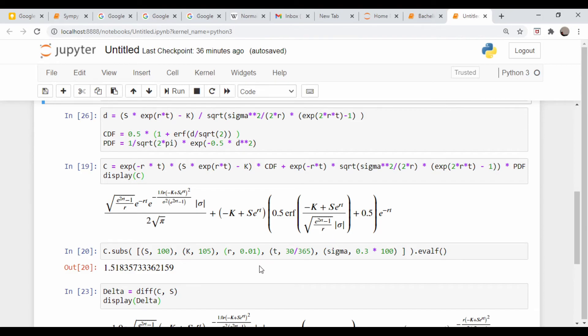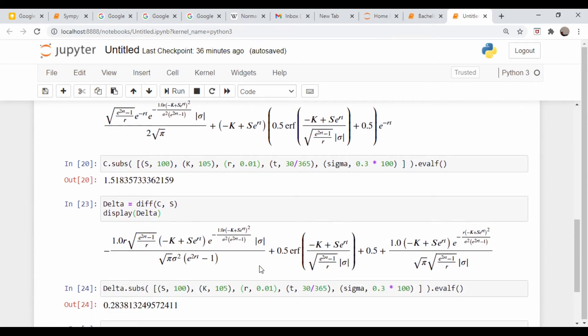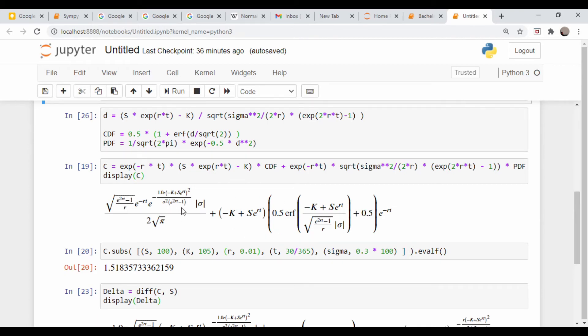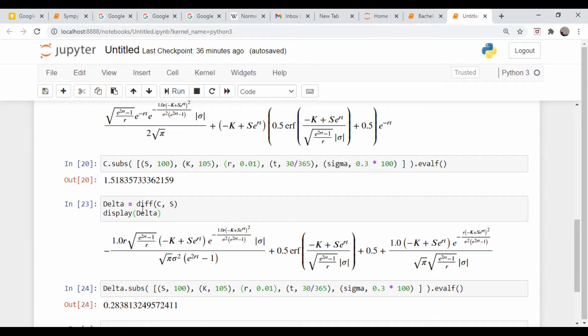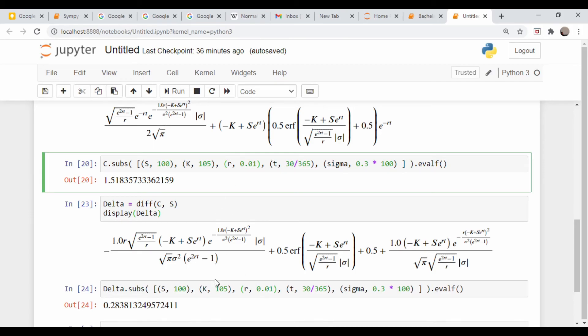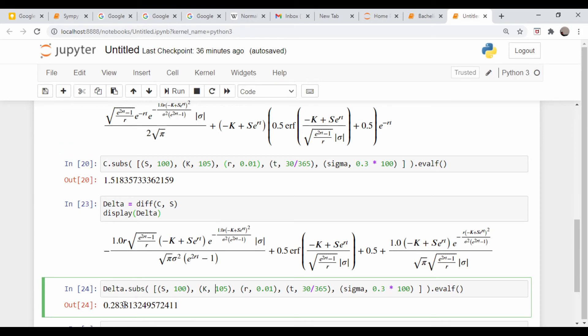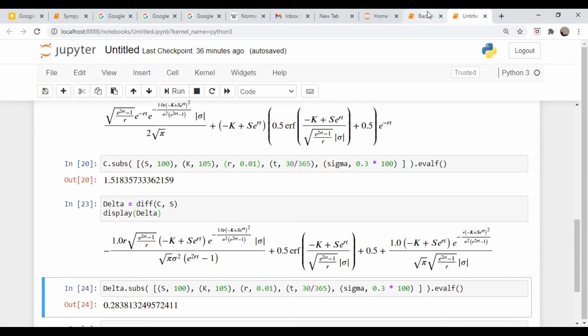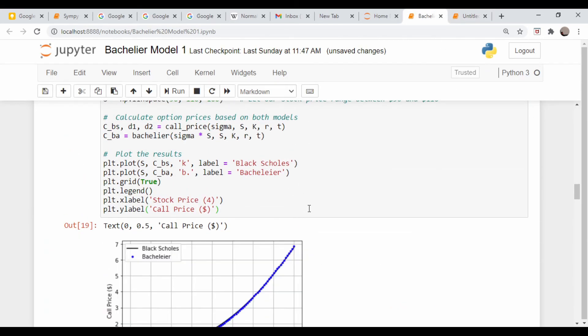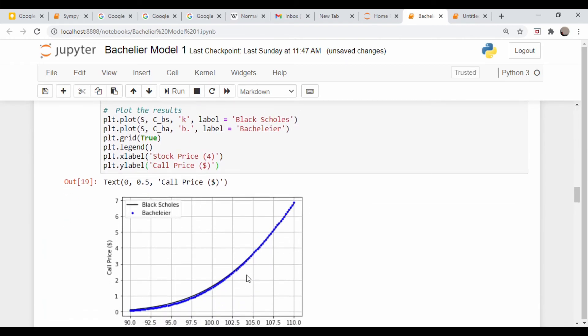Where I think this is really useful is calculating things like the corresponding Greeks. Delta is the derivative of this with respect to S. I don't know about you, but I have zero desire of actually working out what that is. So we can use the diff command for differentiate our call price C with respect to the variable S. And if we print it out, it's this monstrosity here. We can come in and calculate just as above for the 100 call using the same technique as we use for the call price, the delta. And we get a delta of about 28.4.